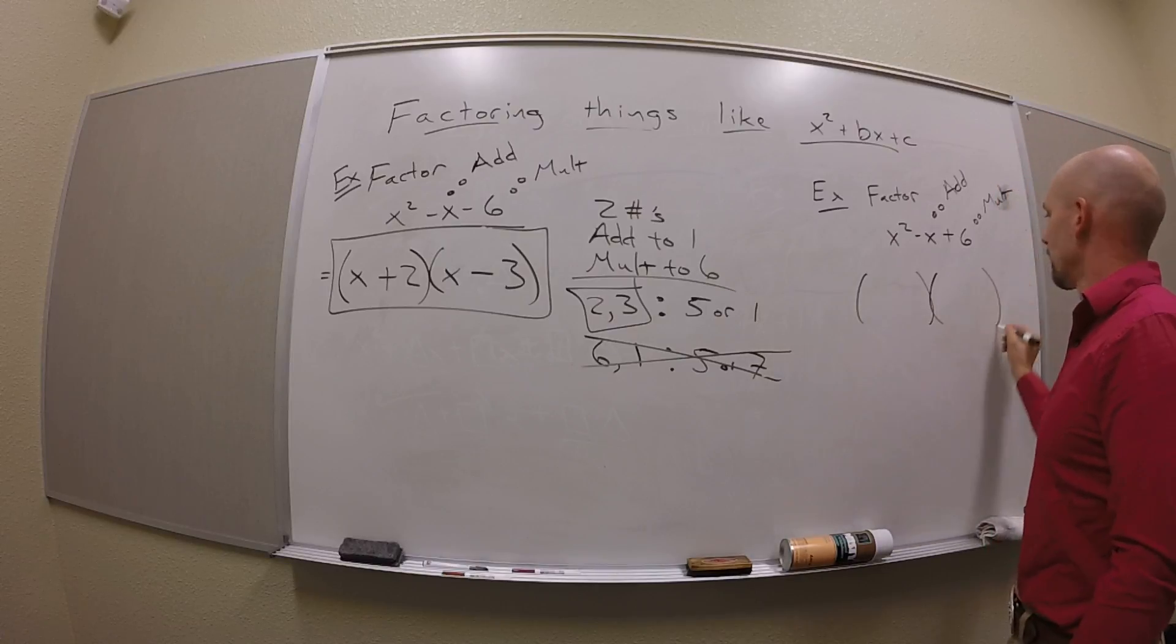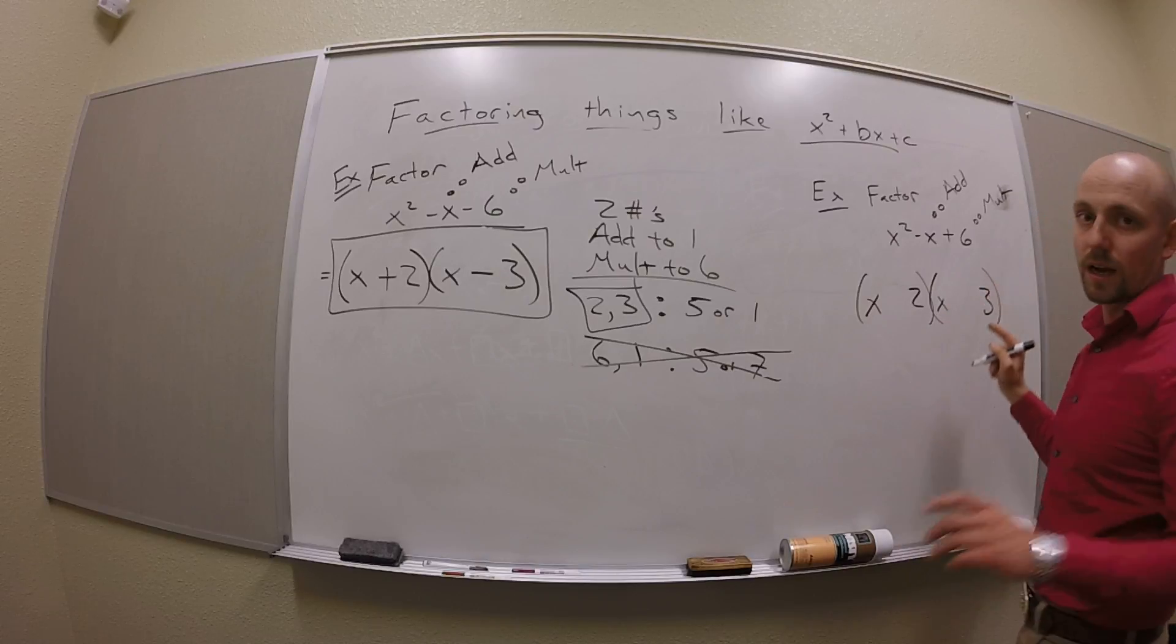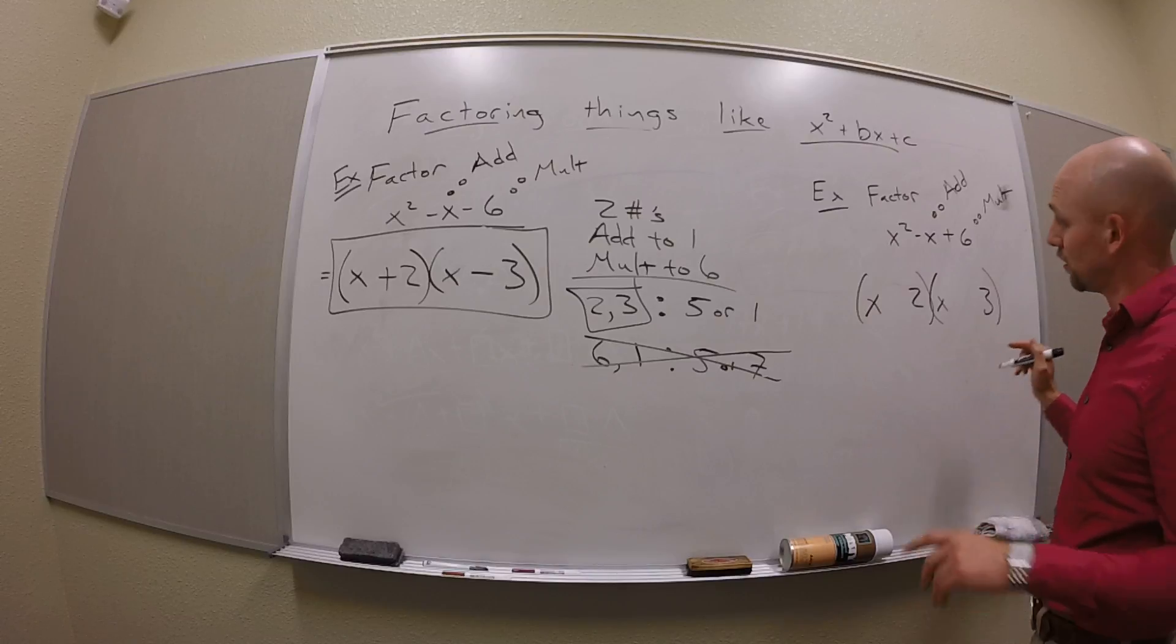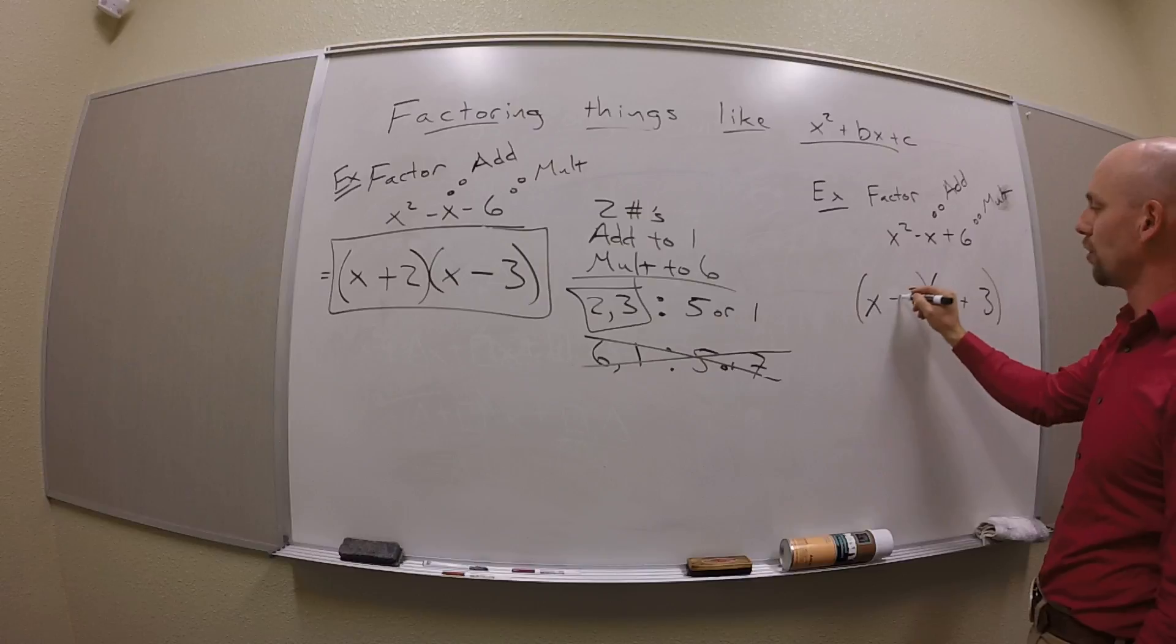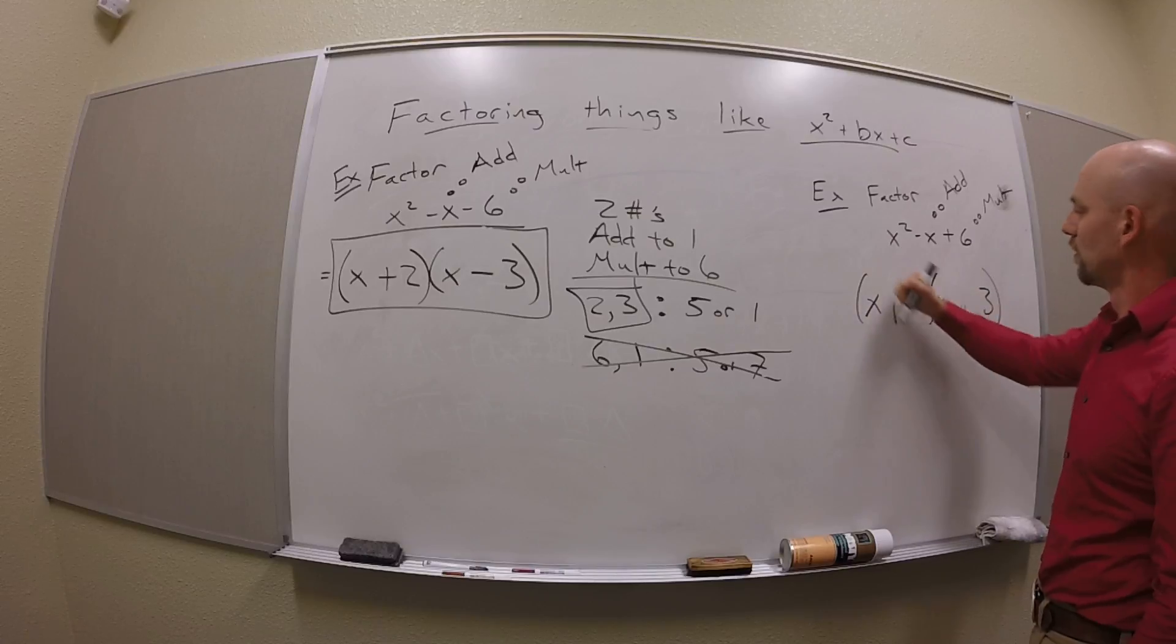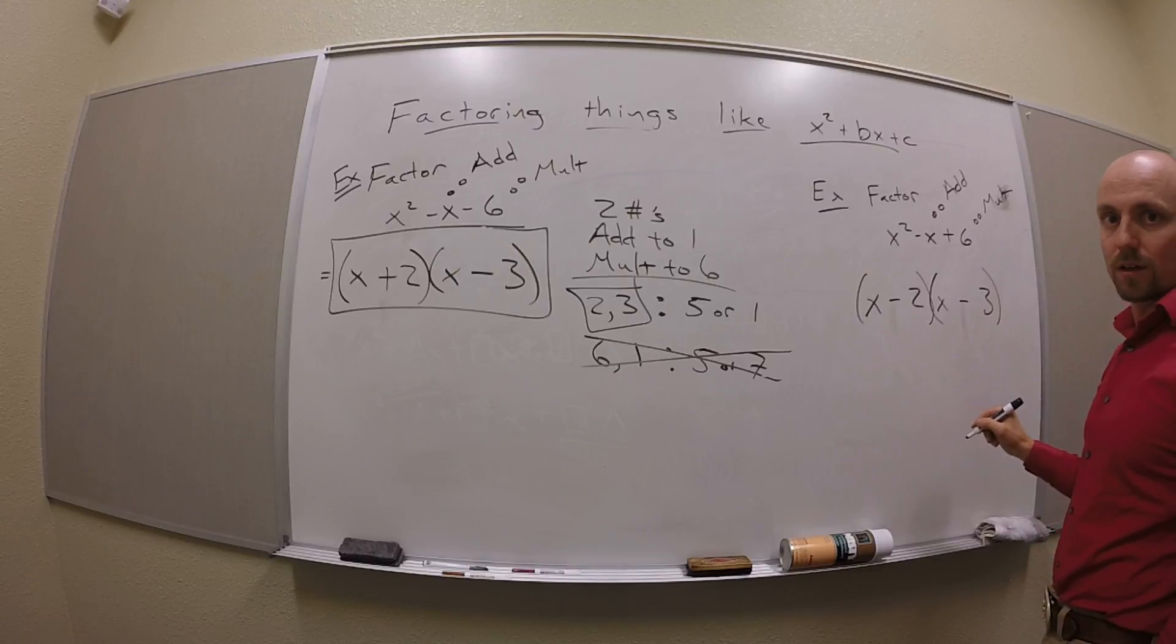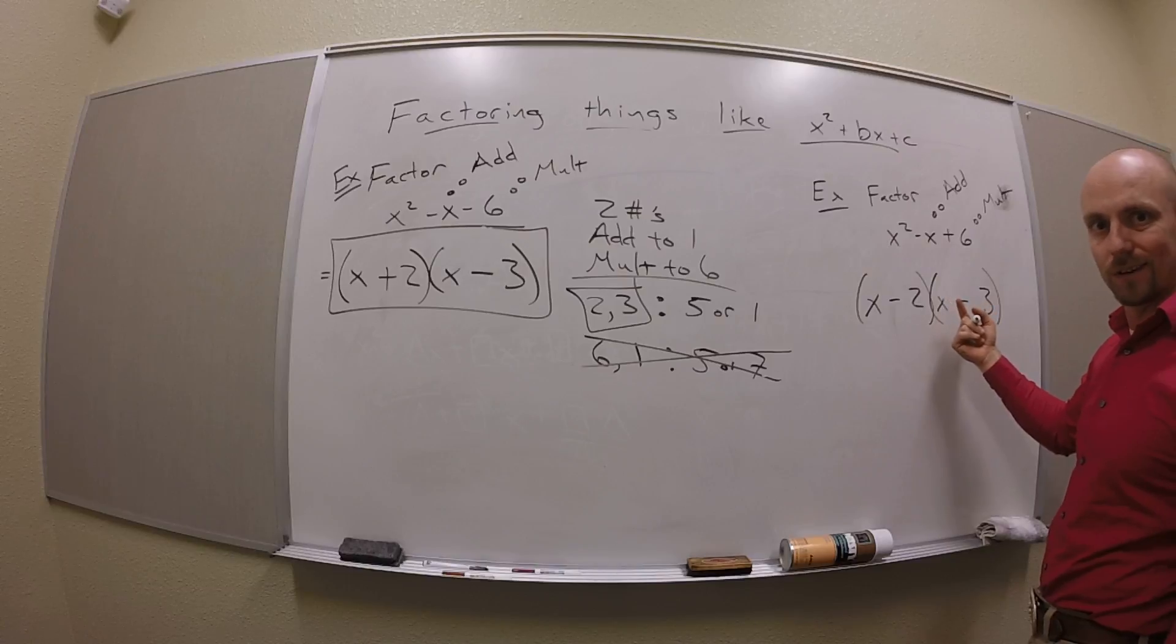So I go, okay, so this is going to be x and 2 and x and 3. And now this is what I meant by sometimes this doesn't happen. So if I put in, let's see, they've got to multiply together to be positive 6, right? So either they're both positive, and then they add to 5, so that doesn't work. So they can't both be positive. Maybe they're both negative. If they're both negative, I do multiply to positive 6, but now they add to negative 5. Crap.